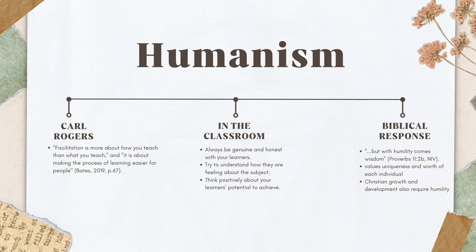A teacher who follows this theory may focus on building a supportive relationship with each student, empowering them to take charge of their own learning process. In the classroom, this theory can be applied through methods such as emphasizing independent learning, allowing students to choose their own learning path, and creating a supportive and nurturing environment that encourages students to reach their full potential. A math teacher could encourage students to take ownership of their learning by allowing them to choose their own math projects, such as creating a budget or designing a blueprint for a new playground for the school. The teacher would act as a facilitator to support the student through the learning process rather than controlling the content and methods of learning.